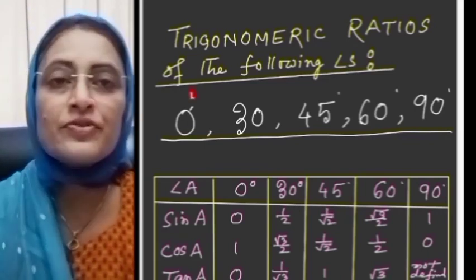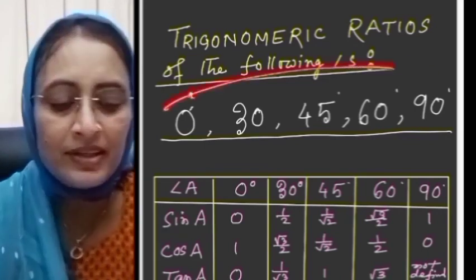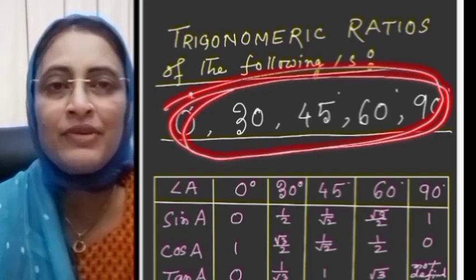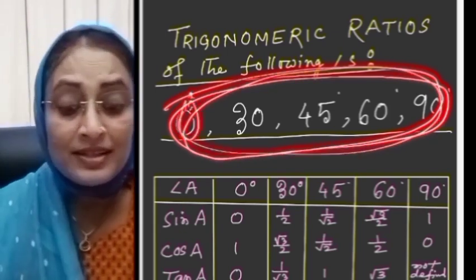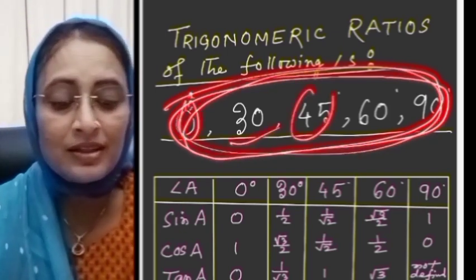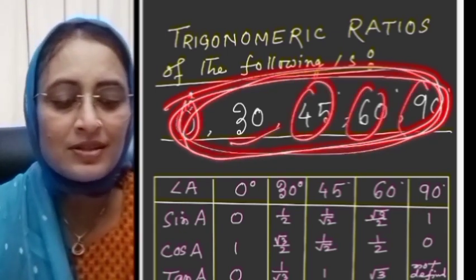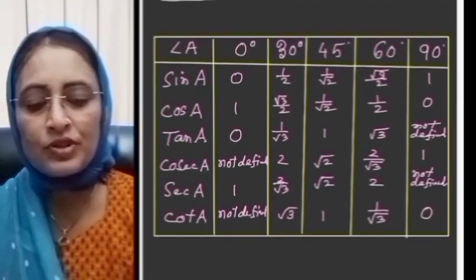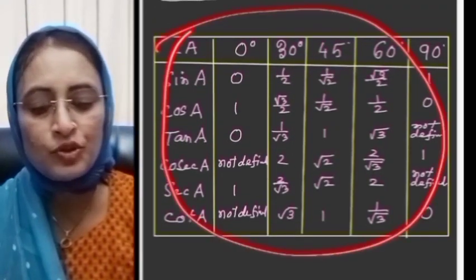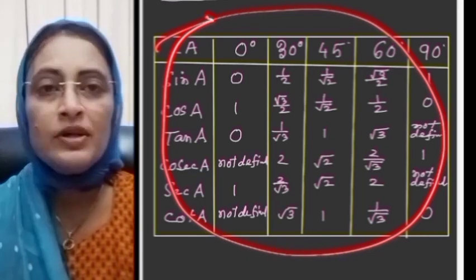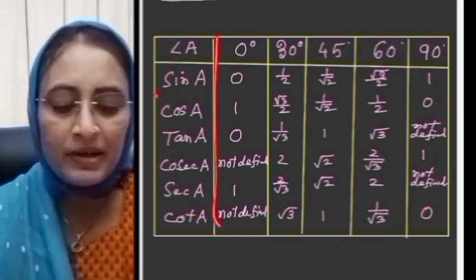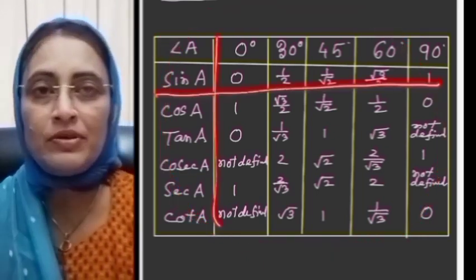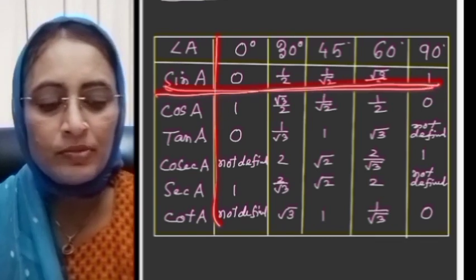These are the trigonometric ratios of some specific angles, which are very very important: 0 degrees, 30 degrees, 45 degrees, 60 degrees, and 90 degrees. We will make a table for these values, and I will give you a trick to remember the first line.